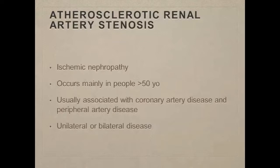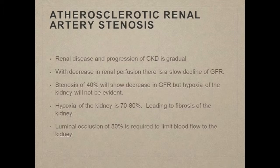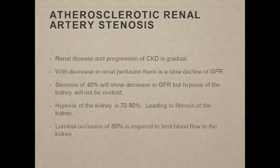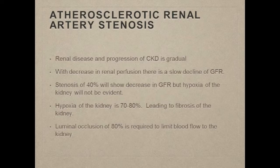Another name for atherosclerotic renal artery disease is ischemic nephropathy. This occurs mainly in people greater than 50 years old, very commonly in those with associated coronary artery disease and peripheral artery disease. It can be unilateral or bilateral. This lady had known chronic kidney disease, but it was a gradually progressive disease and not acute in nature. Atherosclerosis of the renal artery causes a slowly progressive decline in kidney function that usually does not happen acutely. You can see effects on GFR at about 40% stenosis of the renal artery.